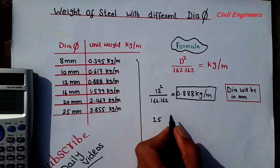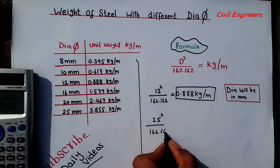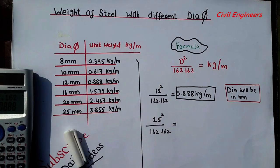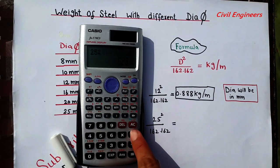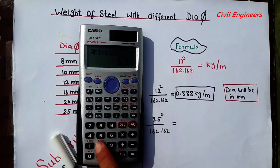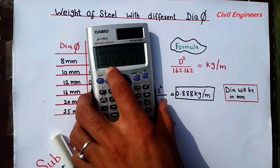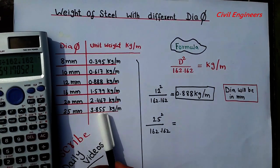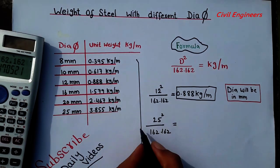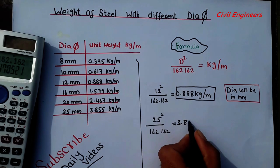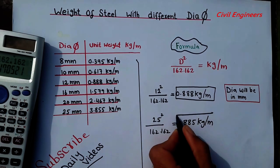So 25 square, same like this, divided by 162.162 is equal, let's use calculator again. 25 square divided by 162.162, which will give you what, 3.855. So 3.855 kg per meter, this is the unit weight for the 25 mm.